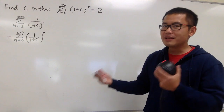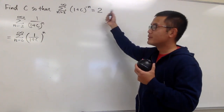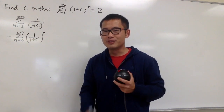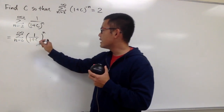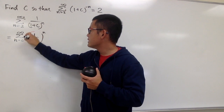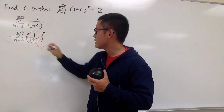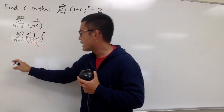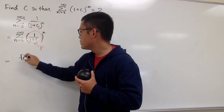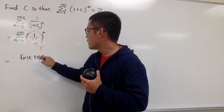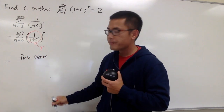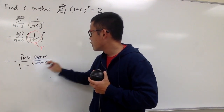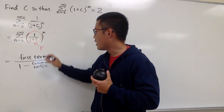Suppose this right here does converge, and it converges to 2. We have a formula for the infinite geometric sum. This is my common ratio. The infinite geometric sum tells us that this is going to be the first term over 1 minus the common ratio r.